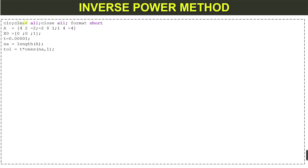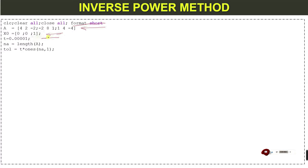The initial commands are: clc, clear all, close all, and format short. Next we define our matrix A, for which we want to calculate the smallest eigenvalue using the inverse power method. We also define the initial starting vector x-naught, and the tolerance T = 0.0001.